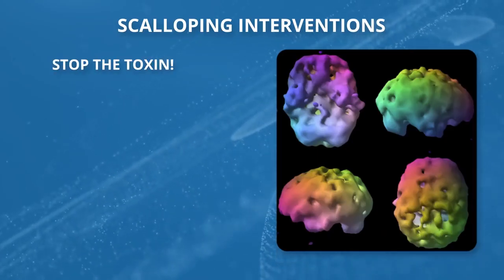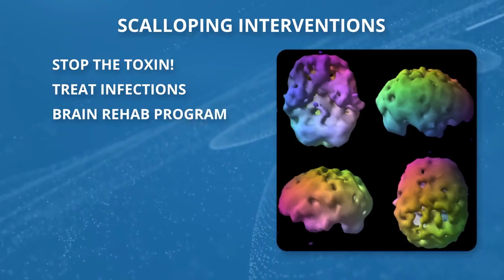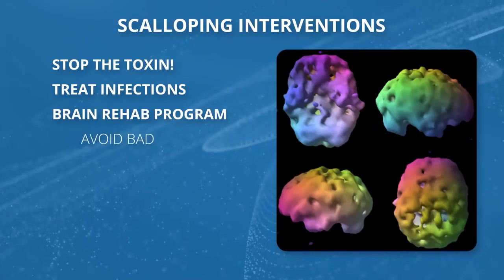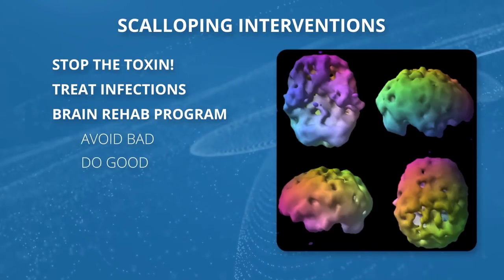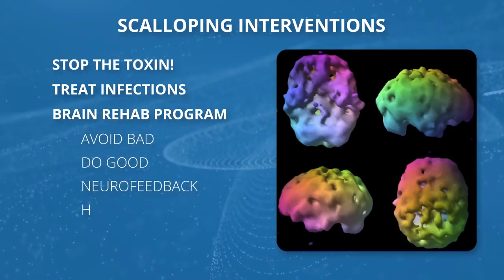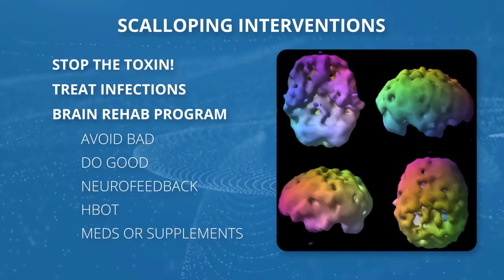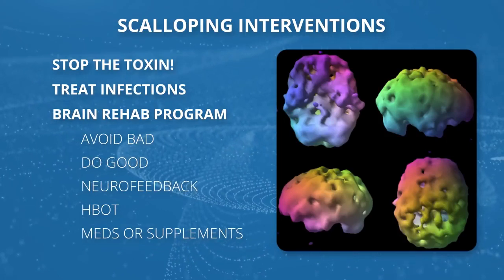When we see this pattern, the first thing is to find and stop the toxin, treat infections, and then work on rehabilitating the brain — putting the brain in a healing environment, avoiding things that hurt it, and doing things that help it. Other treatments we like: neurofeedback, hyperbaric oxygen, and supplements like a multivitamin, fish oil, and brain boost can make a significant difference.